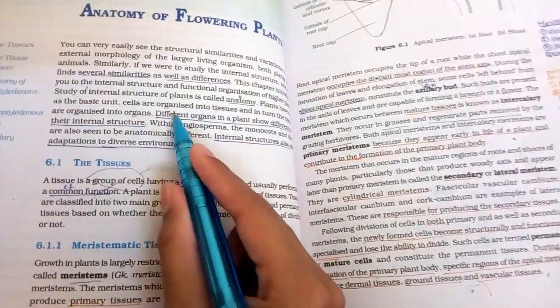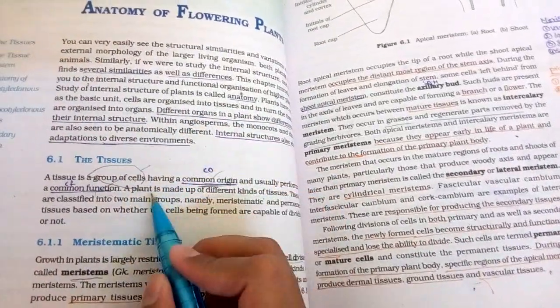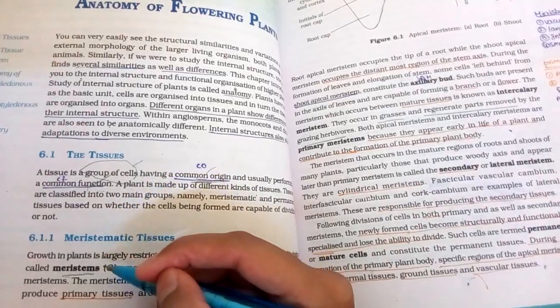What is anatomy? Study of internal structure of plants is called anatomy, which is the internal structure of plants.